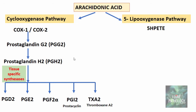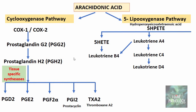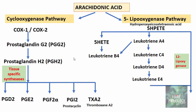Via the 5-lipoxygenase pathway, arachidonic acid goes through an intermediate called 5-HPETE (hydroperoxy eicosatetraenoic acid), which gets converted first to 5-HETE (hydroxy eicosatetraenoic acid), then to leukotriene B4. The 5-HPETE also gets converted to leukotriene A4, which can give rise to leukotriene B4, and also leukotriene C4, D4, and E4. Via the 12-lipoxygenase pathway, 5-HPETE gets converted to lipoxin A4 and lipoxin B4. So finally, prostaglandins, leukotrienes and lipoxins are the eicosanoids derived from arachidonic acid via these two pathways.